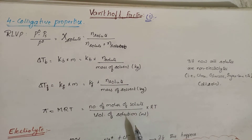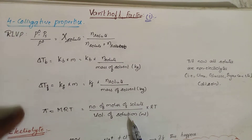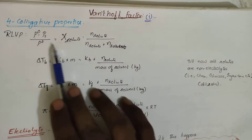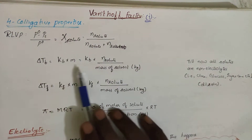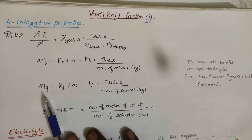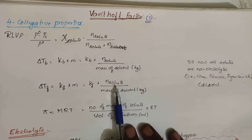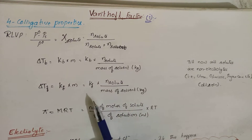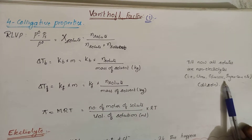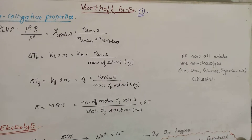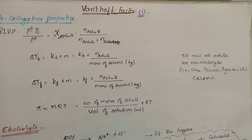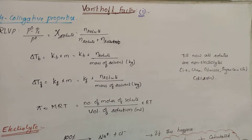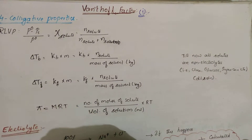All four colligative properties are directly proportional to the number of moles of solute. So far, whatever solute we've taken is a non-electrolyte — it does not dissociate or associate. If you add one particle, it remains as one particle in the solution.